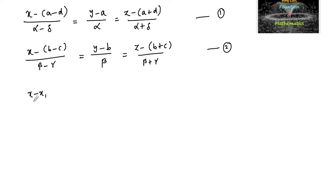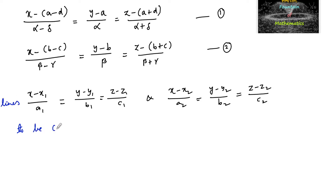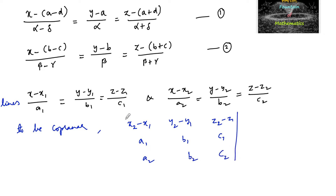These lines are in the standard form x minus x1 upon a1 equals y minus y1 upon b1 equals z minus z1 upon c1, and x minus x2 upon a2 equals y minus y2 upon b2 equals z minus z2 upon c2. For these lines to be coplanar, the condition is that the determinant of (x2 minus x1, y2 minus y1, z2 minus z1 / a1, b1, c1 / a2, b2, c2) must equal zero.